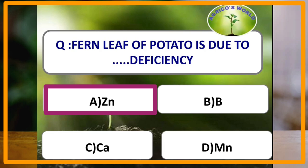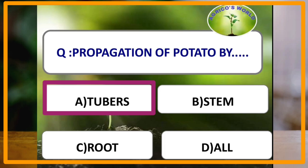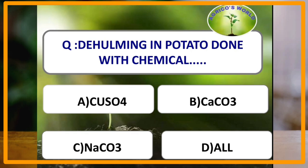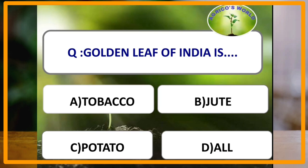Propagation of potato is by tubers, and a tuber is a modified stem. Dehelming in potato is done by copper sulfate.